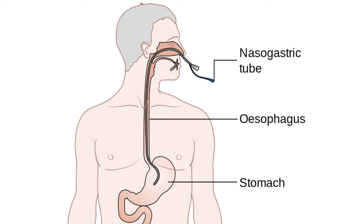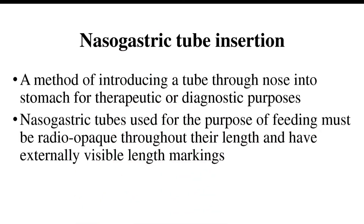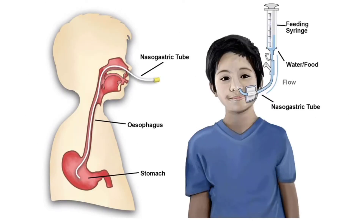Today I am going to discuss the nasogastric tube. A nasogastric tube is a method of introducing a tube through the nose into the stomach for therapeutic or diagnostic purposes. Nasogastric tubes used for feeding must be radioopaque throughout their length and have externally visible length markings. It is a tube inserted through the nose, down the throat and esophagus, and into the stomach. It can be used to give drugs, liquids, and liquid food, or to remove substances from the stomach. Giving food through a nasogastric tube is a type of enteral nutrition. It is also called a gastric feeding tube or NG tube.